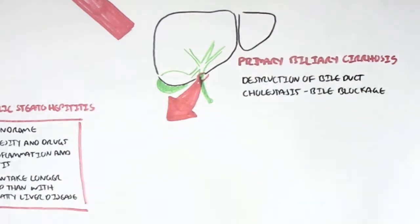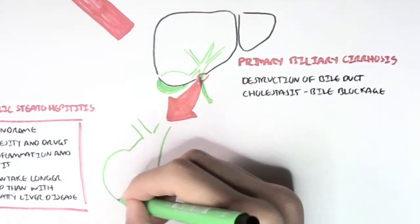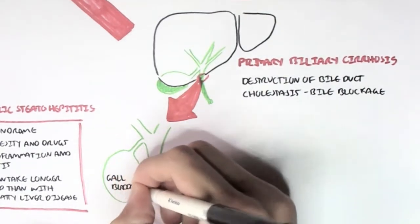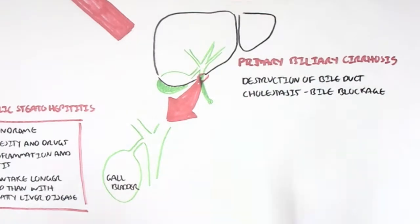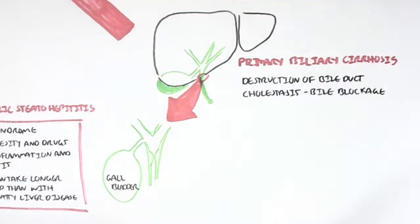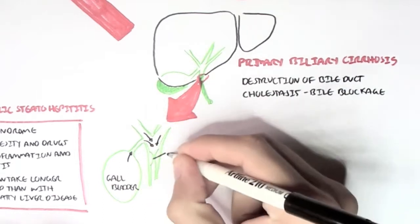So if we zoom into this area, here's our gallbladder and here's our bile duct. We can have blockage within the bile duct, which therefore will cause bile coming from the gallbladder and from the liver to not flow through and therefore can accumulate in the liver and other tissues.